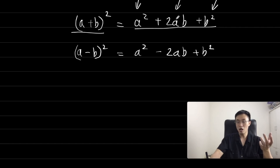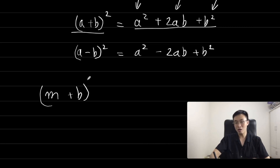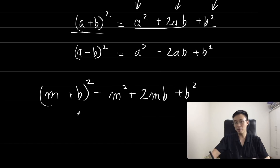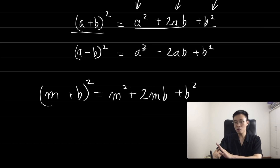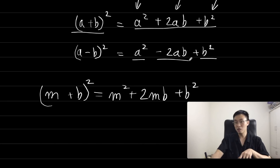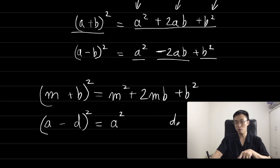For example, if you have (m+b)², the first term will be m², the last term will be b², and the middle term will be 2mb. Similarly, for (a-b)², the first term is a², the last term is b², and the middle term is -2ab. For example, (a-d)²: the first term is a², the last term is d², and the middle term is -2ad.